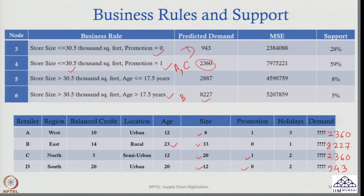Similarly, I can handle any retailer. You give me data for any retailer — the values of these 7 parameters — and I can predict what the demand of that retailer will be using this regression tree.